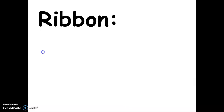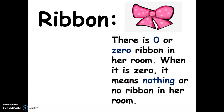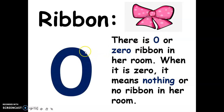For the ribbon, there is zero ribbon in her room. When it is zero, it means nothing — no ribbon in her room. This is the numerical symbol for zero, and this is the spelling of zero.